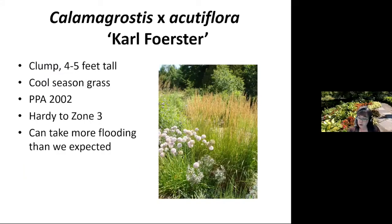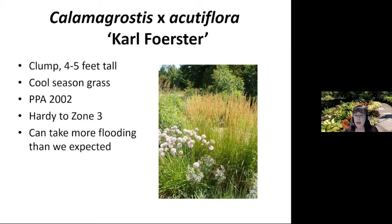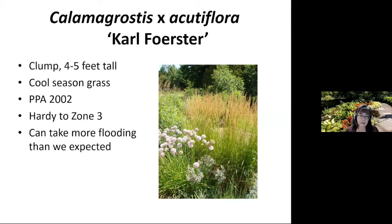That brings us to Karl Foerster feather reed grass. I have a love-hate relationship with it — I feel it's overused in the landscape — but it really showed its colors in our studies. It did really well in moderate drought and seemed to do okay with flooding, which I was not expecting. It bounced back. This is one of those bulletproof grasses: looks great in the landscape, a nice clump former, four to five feet tall, and hardy to zone three.